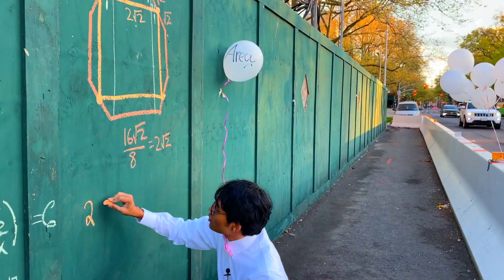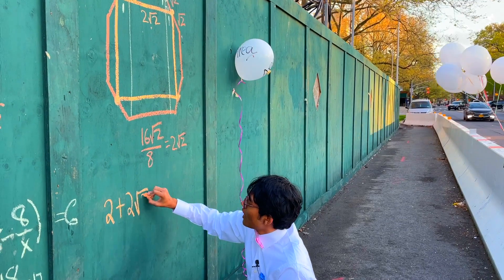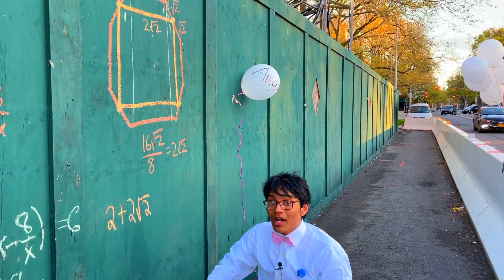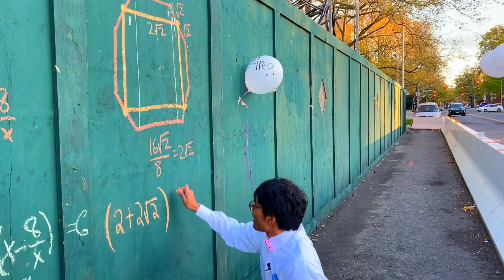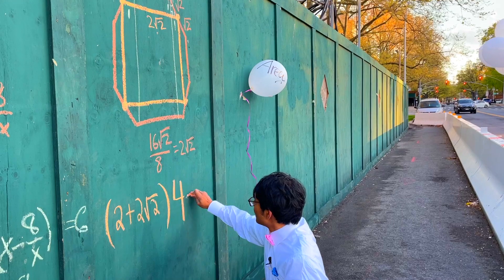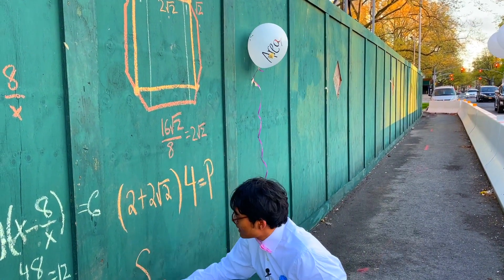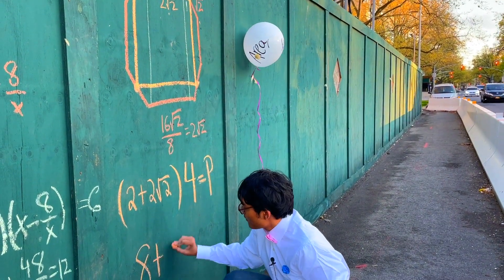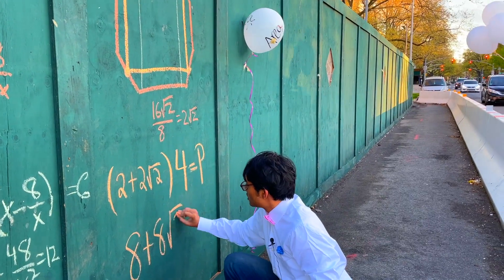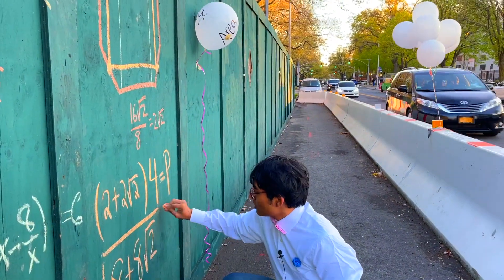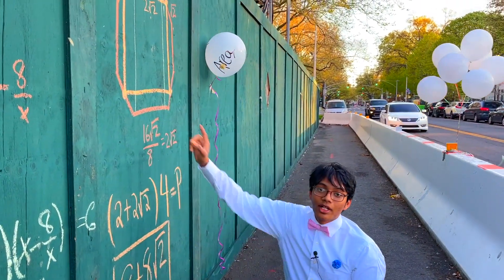So the whole square has a side length of 2 plus 2 root 2. And since there are 4 sides, you multiply all of this by 4 — and that's going to equal the perimeter of the square. So 8 plus 8 root 2 is the perimeter of the square, folks. That's how you find the perimeter.